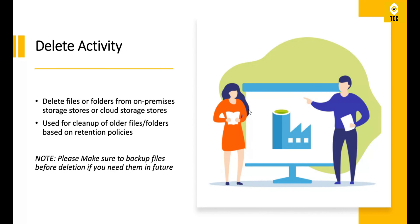Another scenario where you can use delete activity is for renaming a file or folder. There is no rename activity in Azure Data Factory, so what you have to do is use a copy activity to copy the data from one file name to another file name in the same location. After copying, you don't want the older file, so you can use delete activity to remove it. The combination of copy activity and delete activity serves as a substitute for renaming.